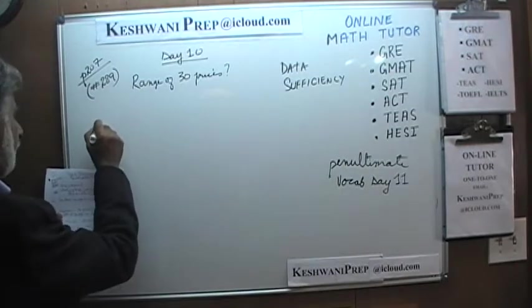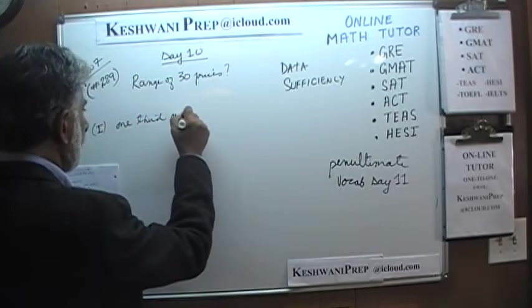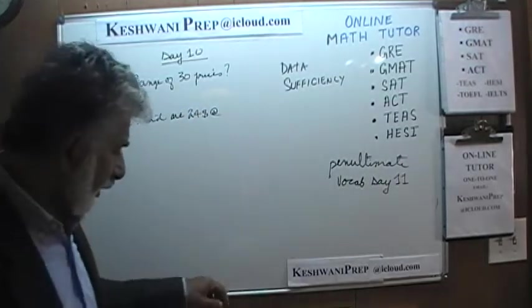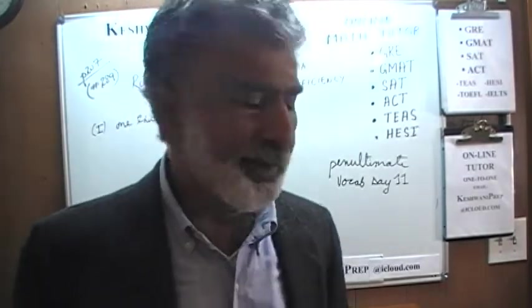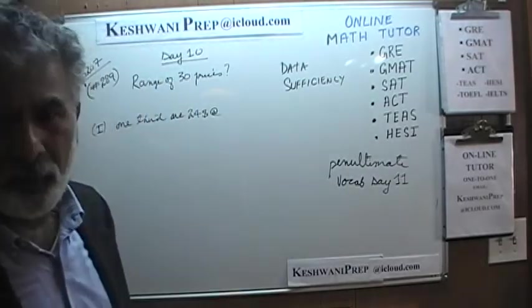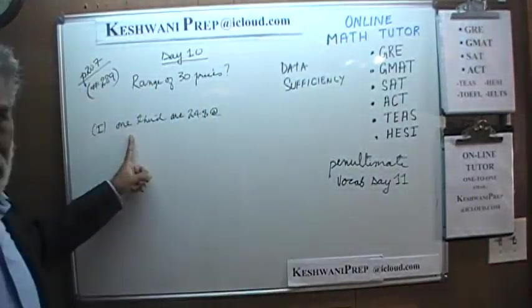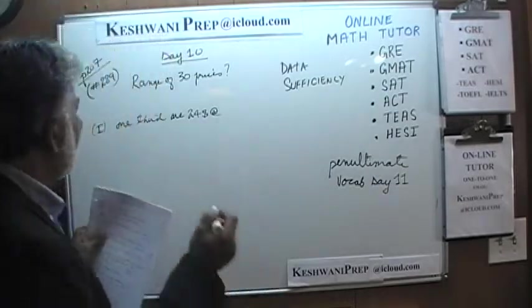The first statement says one third are $24 each. Before we do anything at all, let's take charge of the situation. When they tell you we have to figure out the range of 30 prices, that doesn't mean we have to keep it at 30. Make it something manageable. Since this is talking about a third, let's pick a small sample size divisible by three — let's pretend there are six of them.